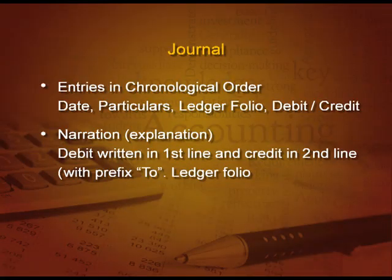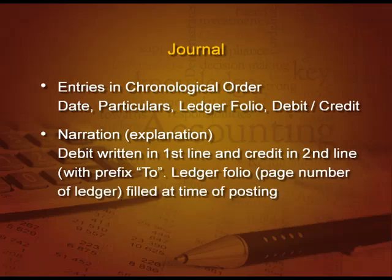For example, if we have to write RAM debit and cash credit, we will write: RAM account debit, To cash. So 'To' is written for the credit part and RAM account debit is written in the first line. The ledger folio — the page number of the ledger — will be filled only at the time of posting it into the ledger. While recording, you just write it blank, and when we post the entry into the ledger, that ledger page number will come in the journal entry.